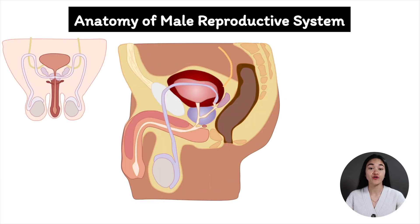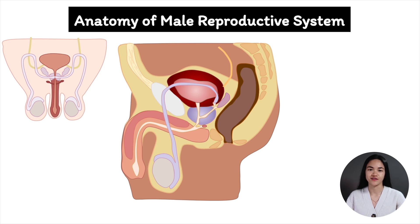In this video, we're going to cover the anatomy of the male reproductive system, including the penis, testes, and accessory glands. We're going to break down the functions of each organ. So let's get started.